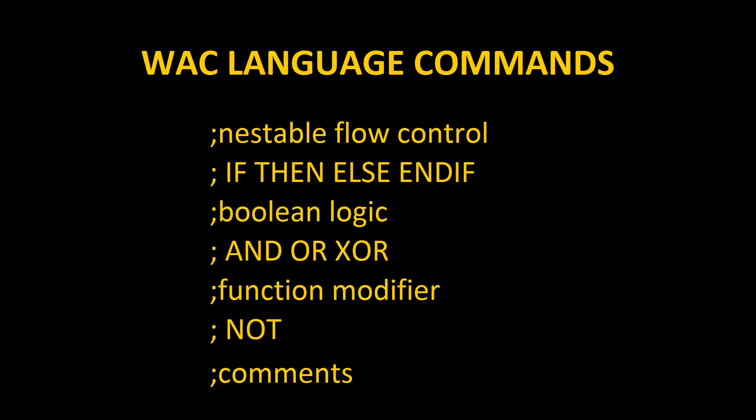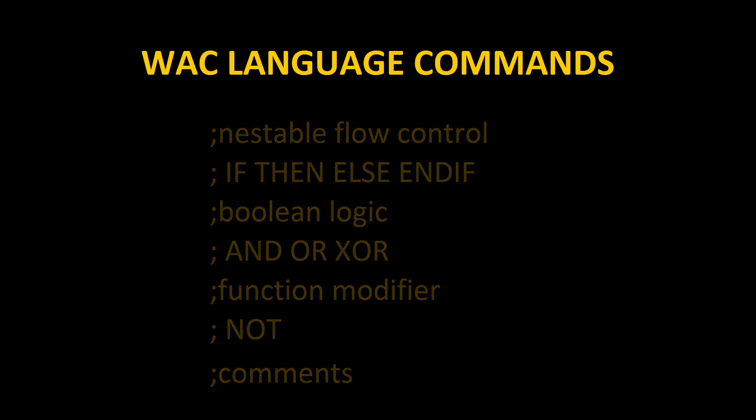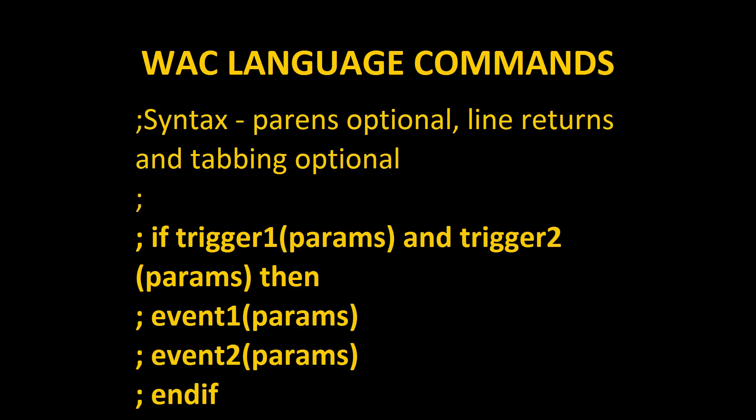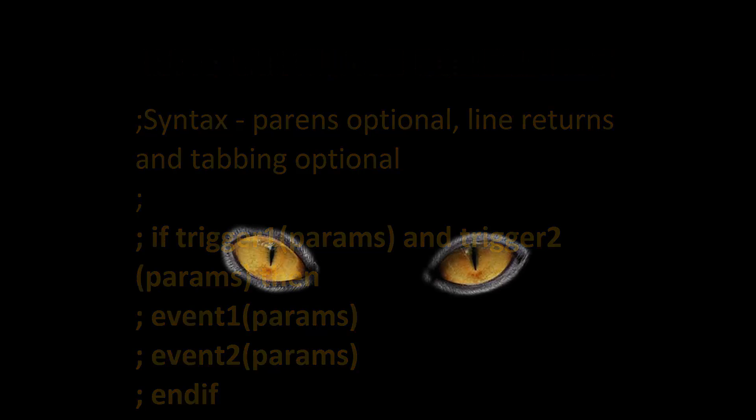WAC language commands: we've already discussed it's a nestable flow control — if, then, else, and if. It's Boolean logic: and, or, XOR. The actual syntax line returns and tabbing are optional. So it's really just: if trigger one, parameters, and trigger two.